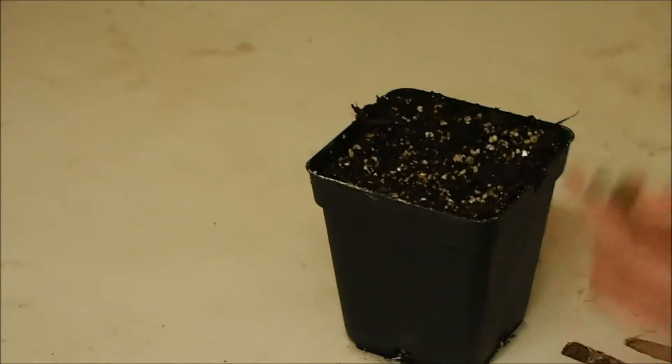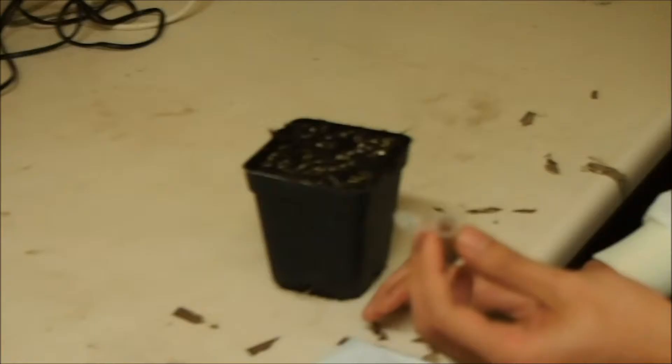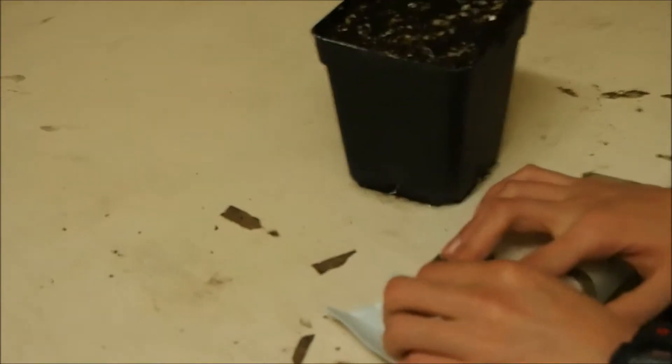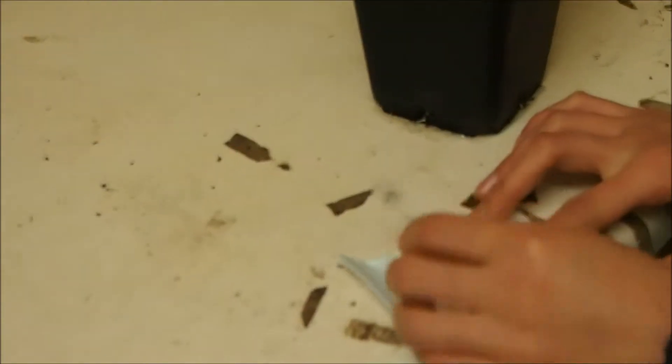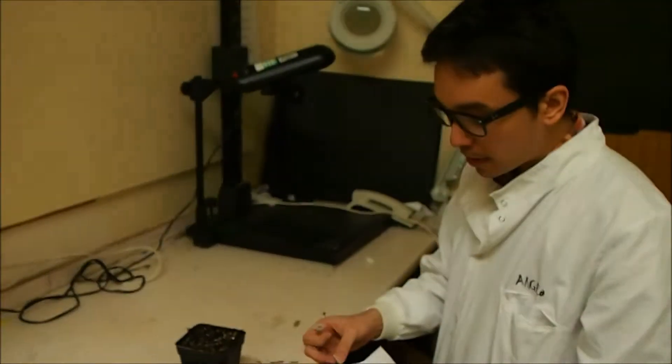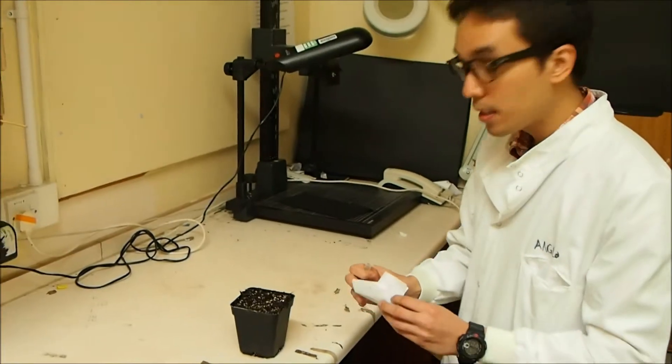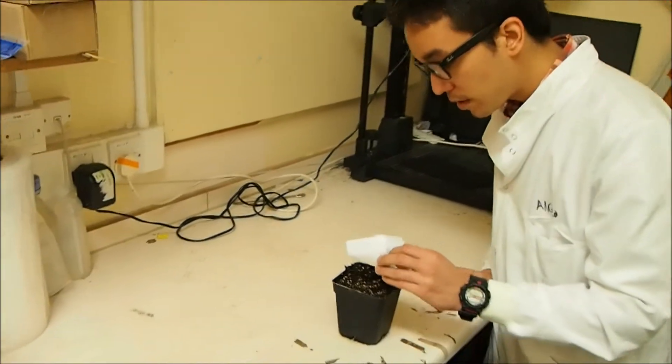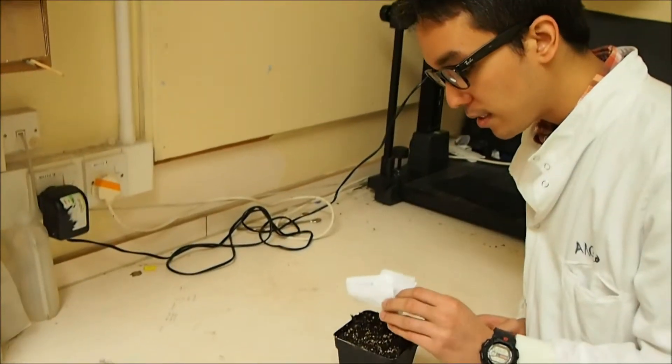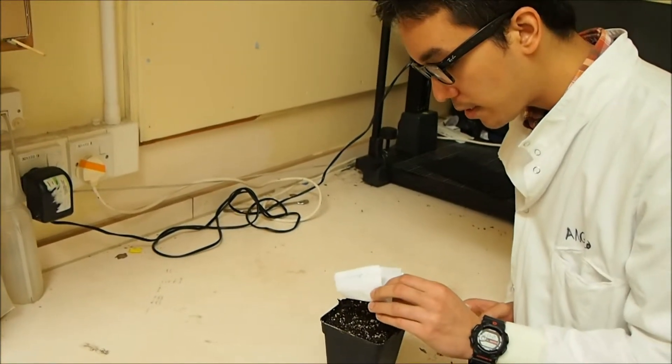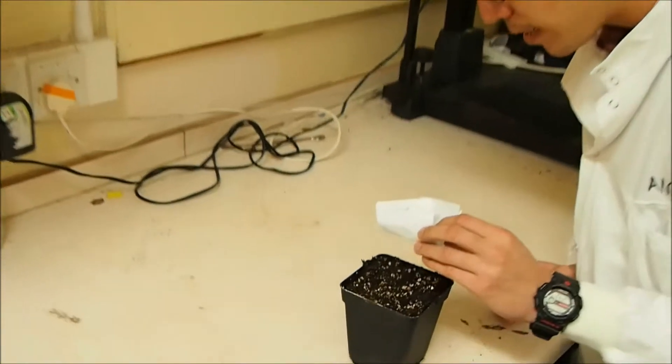And these are the seeds that I'm going to be using. When we put it in the paper, you can actually see the actual size of the Arabidopsis seeds. It's quite tiny. Now I'm going to take a portion of the Arabidopsis seeds and sprinkle them over the pot just slightly so that you can get an even distribution. Just slowly, slowly.